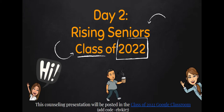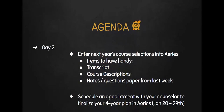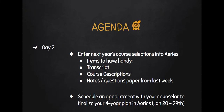You can also go back and re-watch this video as much as you need. What are we doing today? We're going to go in and enter the classes that you would like to take for your senior year into ARIES. Some items to have handy would be your transcript, any course descriptions you need to review, and your notes or questions from last week. We'll also be scheduling an appointment with your counselor to finalize your four-year plan in ARIES, and the appointment window is from January 20th to January 29th.